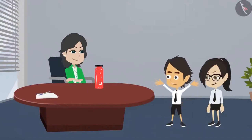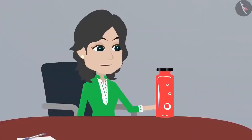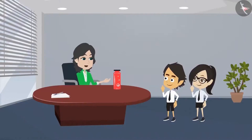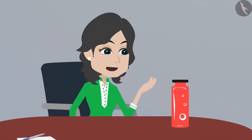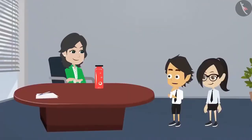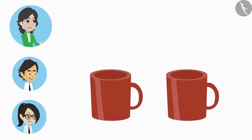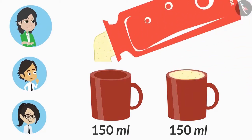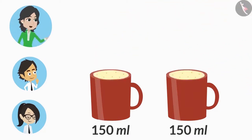Am I correct, madam? You are absolutely correct, Ayushman. But how will we measure 150 ml? There are different measuring cups to measure liquid, but we do not have those cups with us right now. Then how will we measure the buttermilk? Look, I have two cups here. A normal size cup is approximately 150 ml. You can pour the buttermilk into both these cups. Both the cups are completely filled. This means the buttermilk has been divided into two equal parts.